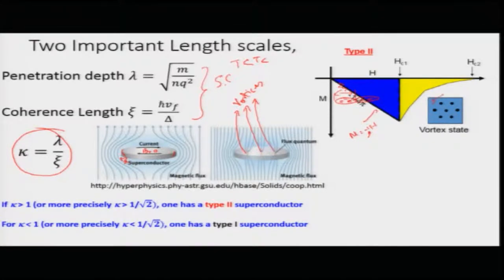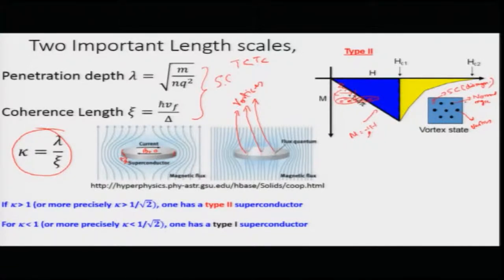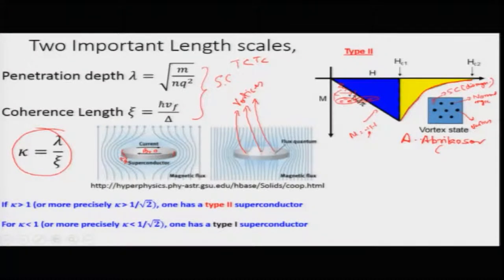In this case you have superconducting regions and the system breaks up into microscopic normal regions called vortices. The superconductor breaks up into diamagnetic superconducting regions and non-diamagnetic normal regions, so the diamagnetism decreases gradually as you go up to Hc2. This discussion and the proof that vortices organize themselves into a very ordered arrangement was done by Abrikosov, for which he won the Nobel Prize in 2003.